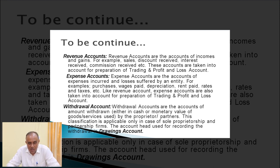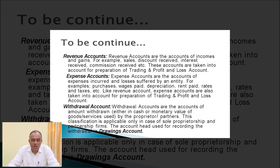All revenue income and expenses are shown under the trading and profit and loss account to find out gross profit and gross loss. As per the modern approach, the last classification of accounts is the withdrawal account or drawings account. This is the amount withdrawn by the owner from the business — that may be cash, goods, etc. — and is called drawings. As per the modern approach, entire business accounts are classified under six categories: assets, liabilities, capital, revenue, expense account, and withdrawal account.